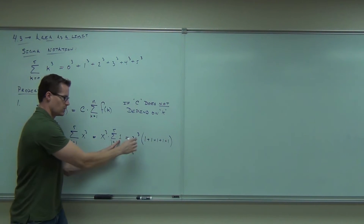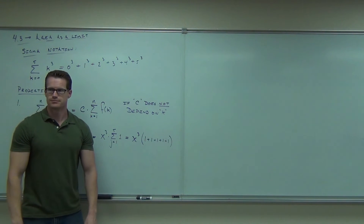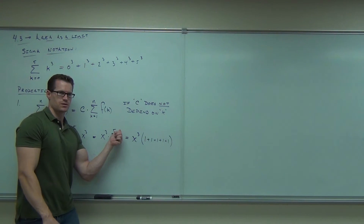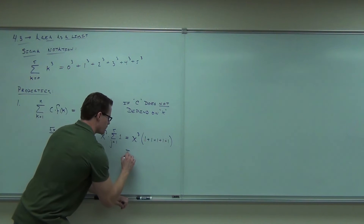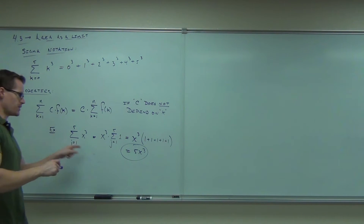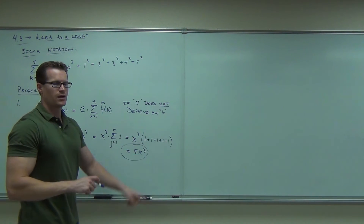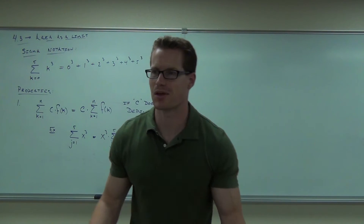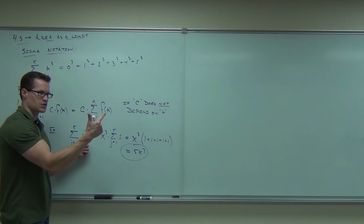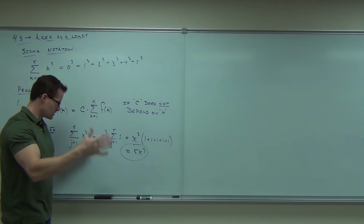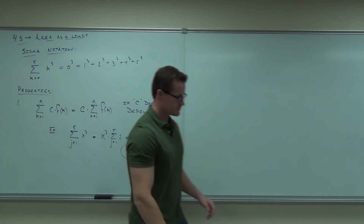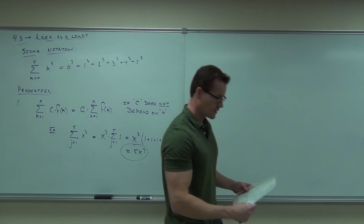So this is going to be n — 5 in this case — giving you 5x cubed. That's what that means. It should make a lot of sense: x cubed plus x cubed plus x cubed plus x cubed plus x cubed gives you 5x cubed.